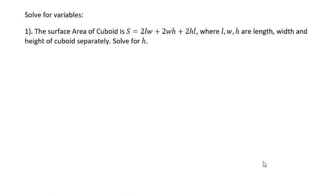Today's video is about how to solve for a variable in multiple variables. For number one, the surface area of a cuboid is given by this formula, where L, W, H are the length, width, and height of the cuboid separately. Solve for H.